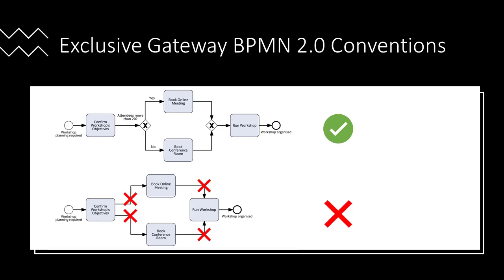On the other hand, the process below is splitting the flow without the usage of gateways. It is against the conventions to have two or more arrows or sequence flows coming out of or going into any element other than a gateway.